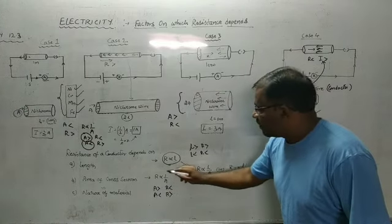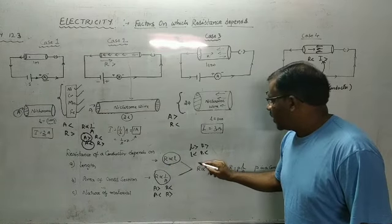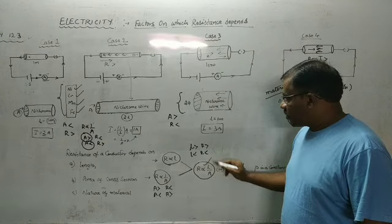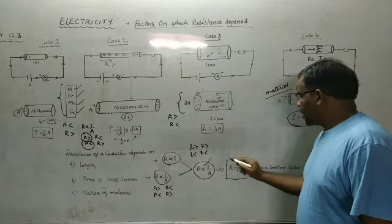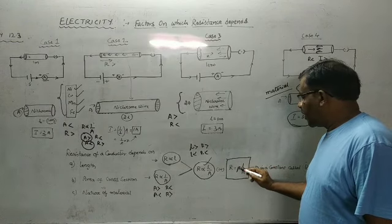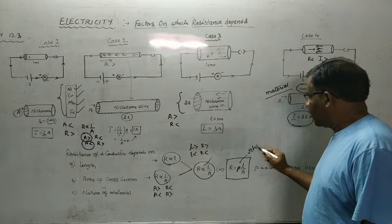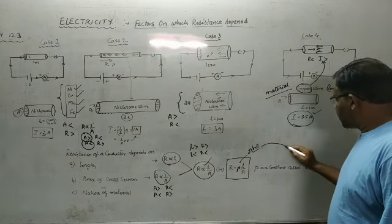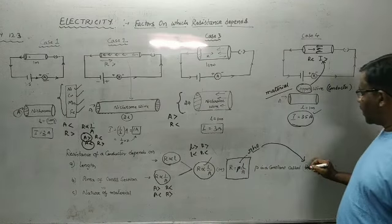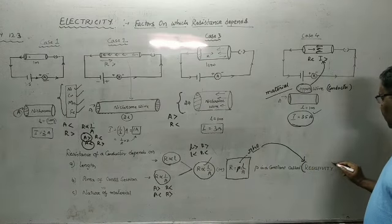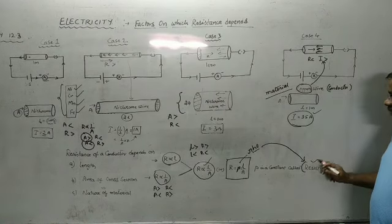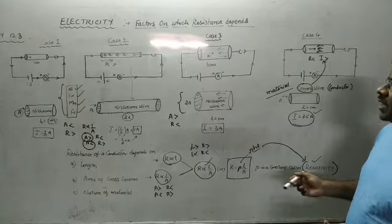From these relationships we conclude that R is proportional to L divided by A, and resistance can be calculated by the formula R = ρL/A. This proportionality constant ρ (rho) is called specific resistance or resistivity. In the next concept, I will explain what resistivity means, its formula, SI units, and more.